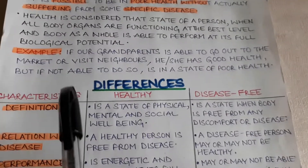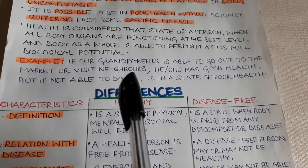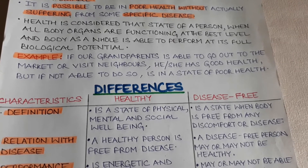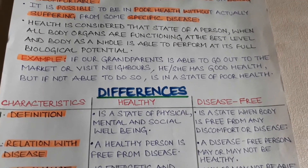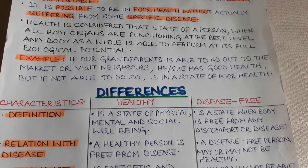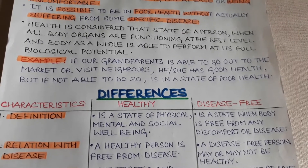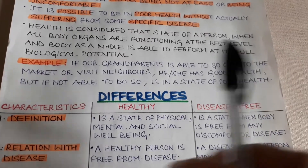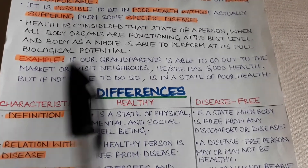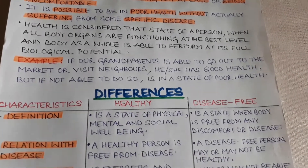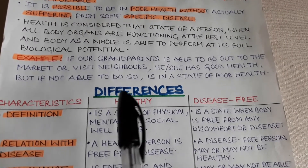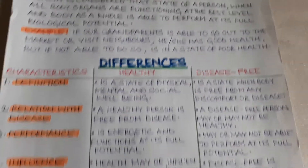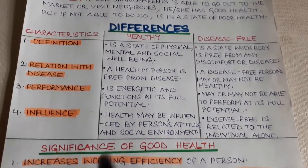For example, if there are grandparents at home and they are able to go out to the market or visit neighbors on their own without the help of others, it means they are in a state of good health, because their body is performing to its full biological potential at that age. If they are not able to do so, it means they are in a state of poor health.